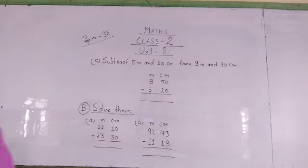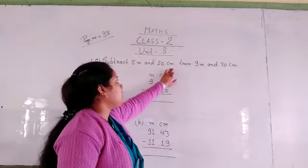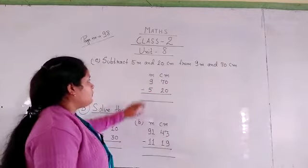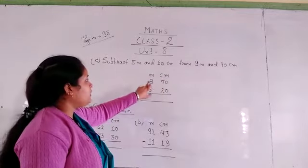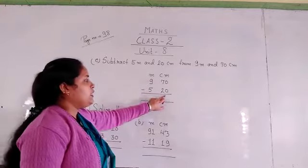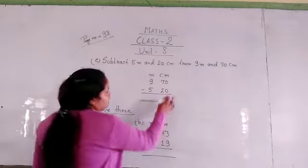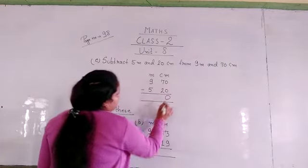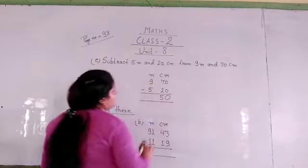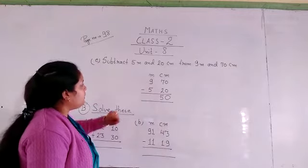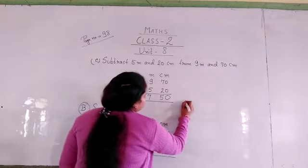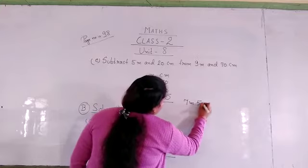Next question E: subtract 5 meter and 20 centimeter from 9 meter and 70 centimeter. We write meter and centimeter. First we write 9 meter 70 centimeter, then 5 meter 20 centimeter. We start subtraction: 0 minus 0 is equal to 0, and 7 minus 2 is equal to 5. Then we subtract meter: 9 minus 5 is equal to 7. Our answer is 7 meter 50 centimeter.